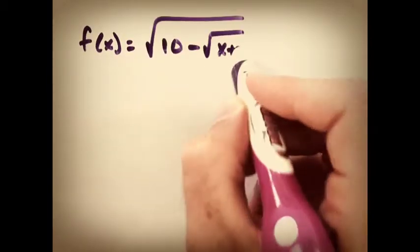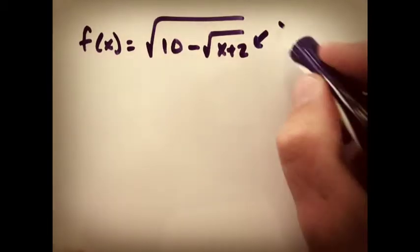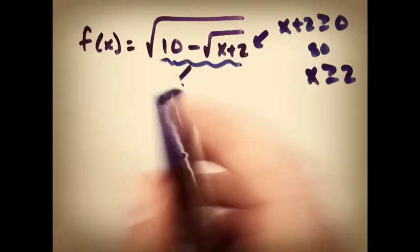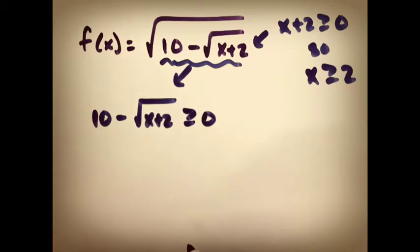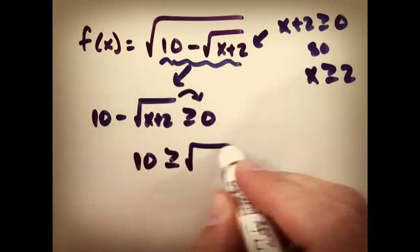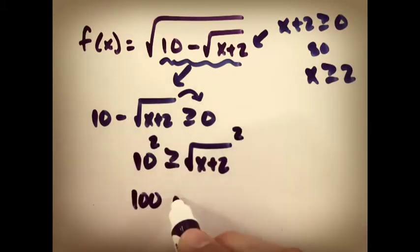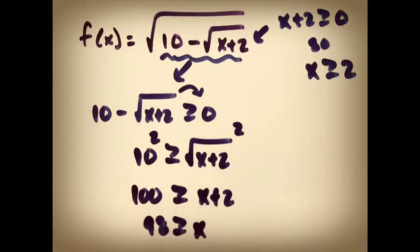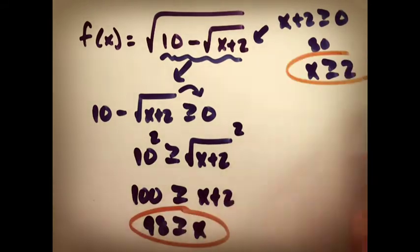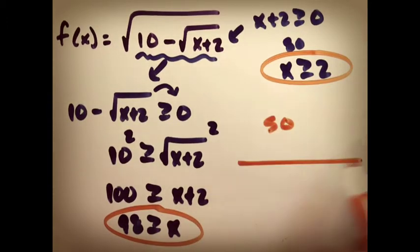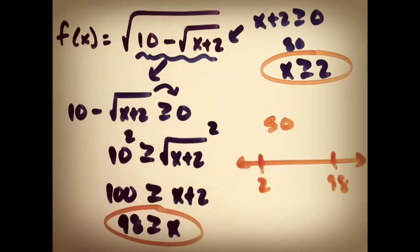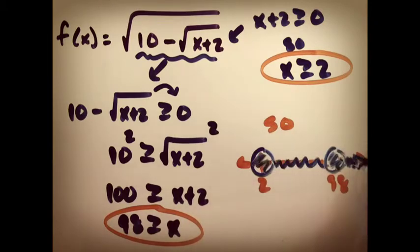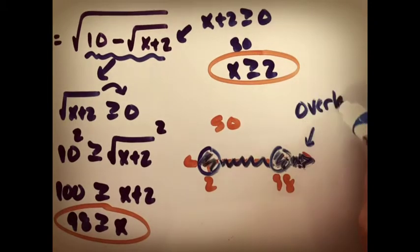A tough one with a double square root. Just remember, the same principle holds. The first little square root, X plus 2, has got to be positive. And the big square root, 10 minus the square root of X plus 2, has to be positive. So you work both of those out. And then you compare the two answers, and you see where they overlap. One of them has to be greater than 2. The other one has to be greater than or equal to 98. So if you look at it on a number line, they both overlap once they're past 98. You can see what I did there on the number line.